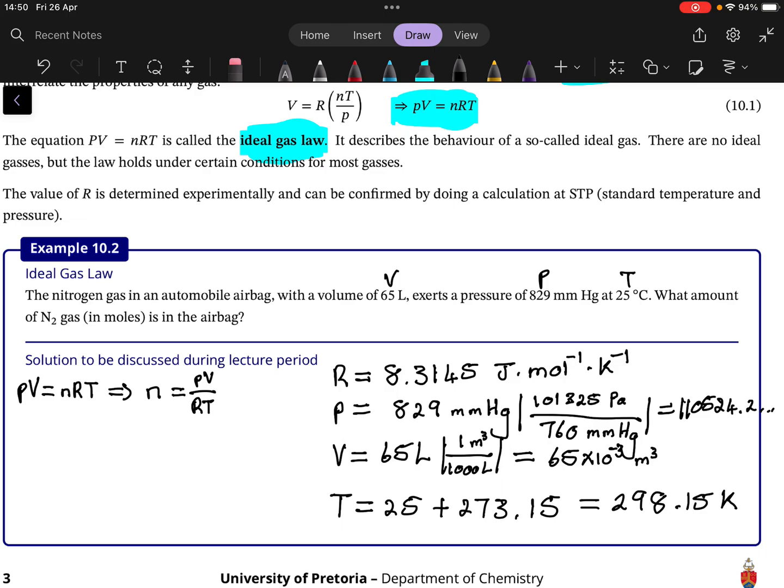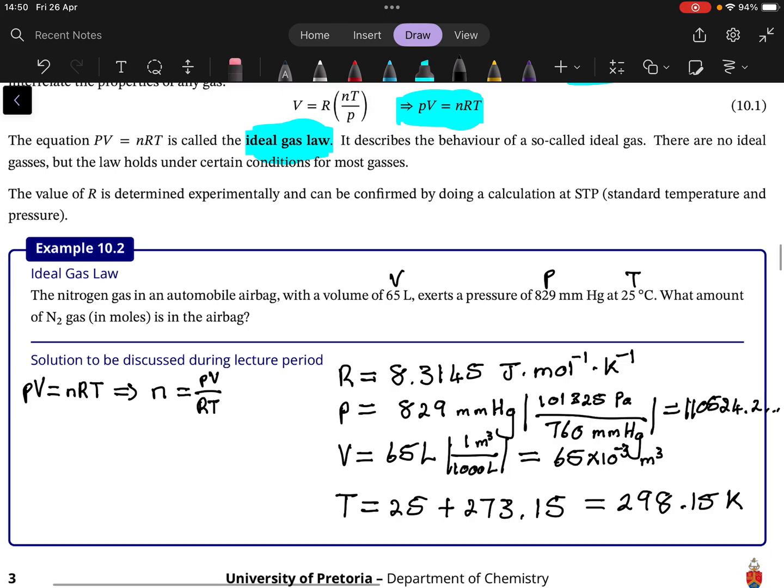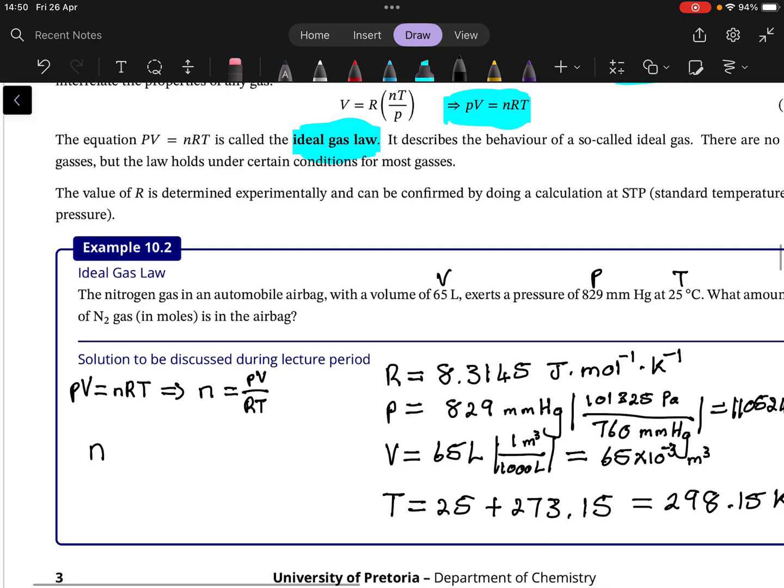So you'll see at some point we get pascal cubic meter per kelvin and then that cancels with the joule because of what pascal's inherent unit is. So we should get n is equal to 2.9 mole.